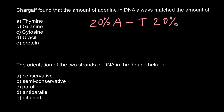So the other 60% would also be split between guanine and cytosine. Based on this information, Watson and Crick were later able to define the structure of DNA.